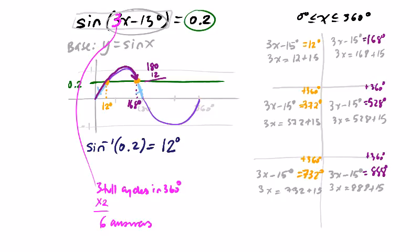And then we're going to, once we have the answer, so 12 and 15 was 27, 27 divided by 3, so that will give us 9 degrees. And here we have 168 plus 15, then divided by 3, 61 degrees. And then here we have 372 plus 15 is 387, divided by 3, 196 degrees rounded to the nearest whole angle. And this one, 528 plus 15 is 543, divided by 3, 181 degrees.